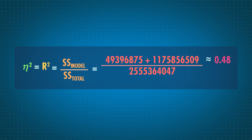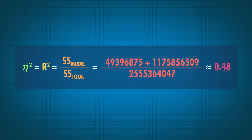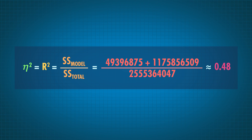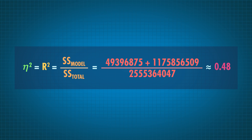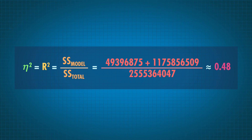We might also be interested in how well our entire model, with both manufacturer and color, can predict sedan prices. Say we were designing this model for a car selling website so that they can tell customers what they should expect to pay for their dream car. They might ask us to calculate Eta squared, which here is equivalent to R squared for our entire model. The formula is exactly the same. So now we know that our entire model, with both factors, accounts for about 48% of the variation in the data. So 48% means we can predict about half the variation, while the rest is explained by other factors we didn't include in our model, like the size and style of a car, as well as error.